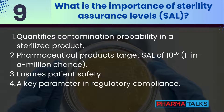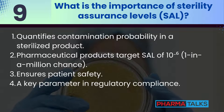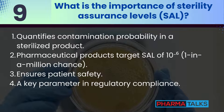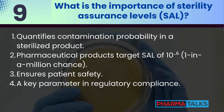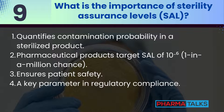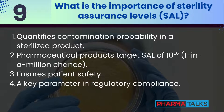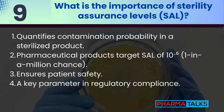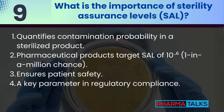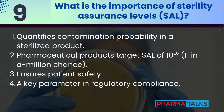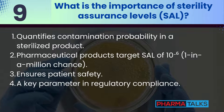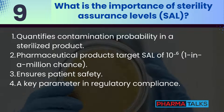What is the importance of sterility assurance levels (SAL)? Sterility assurance levels quantify the probability of a single viable microorganism in a sterilized product. For pharmaceutical products, SAL is typically set at 10⁻⁶, meaning a 1-in-a-million chance of contamination. This standard ensures patient safety and is a key parameter in regulatory compliance.